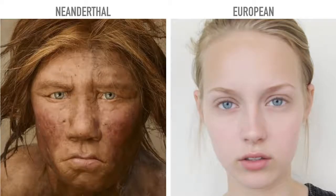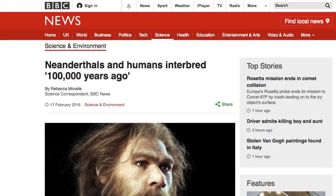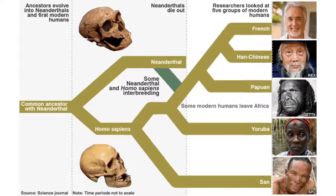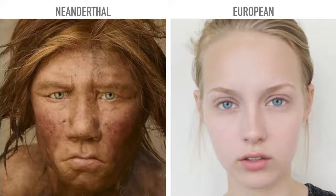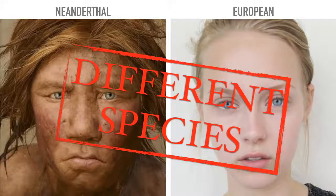So here we have a Neanderthal and a European. What some people aren't yet aware of is that Neanderthals and humans actually interbred 100,000 years ago — though they only interbred with certain groups of humans. Do you think Neanderthals and Europeans are A, a separate species, B, a separate subspecies, or C, a social construct? They're a different species.